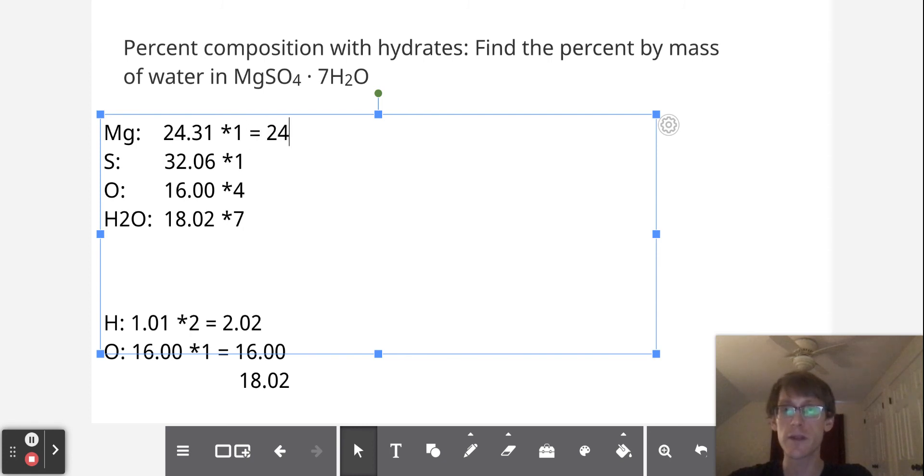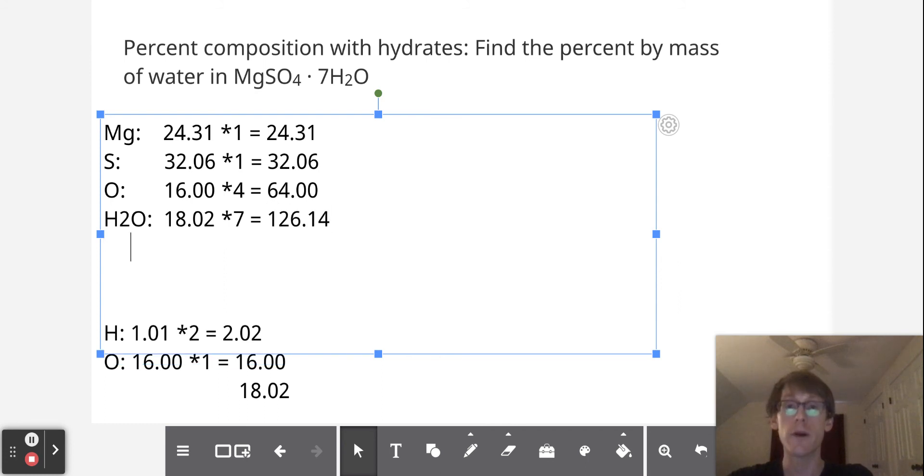And what this comes out to is 24.31, 32.06, 64.00. And for water, it comes out to 126.14. And when we add them all up, we end up with 246.51 grams of magnesium sulfate heptahydrate per mole.